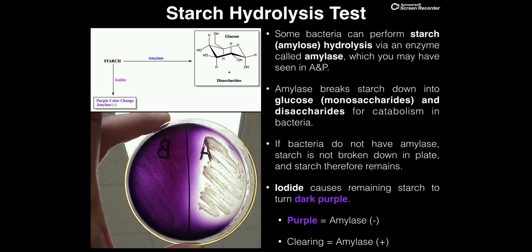Some species of bacteria are capable of performing what's called starch hydrolysis. Another term for starch that you may have heard in other classes or textbooks is amylose. Some bacteria can actually hydrolyze or break down this amylose into individual disaccharides and monosaccharides. Starch can be broken down into glucose, which is our monosaccharide, and other small disaccharides, and this is accomplished via an enzyme called amylase.